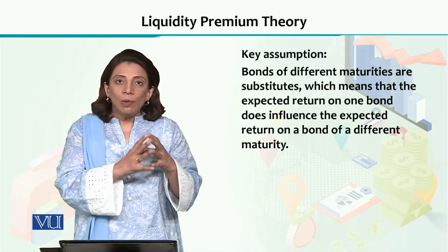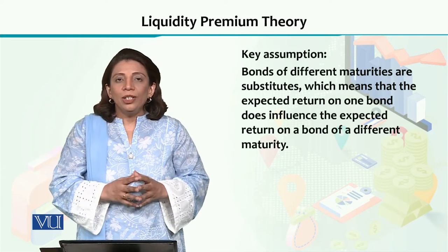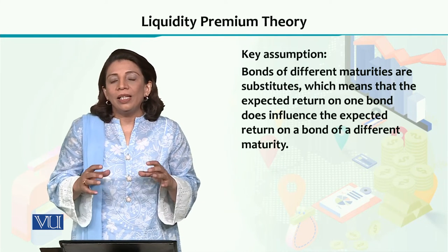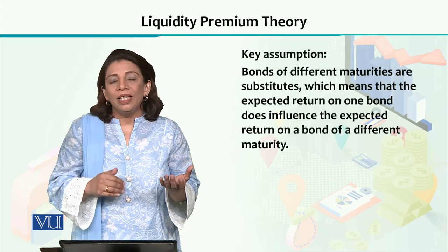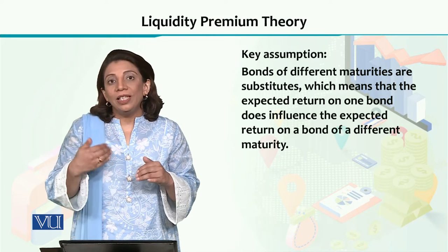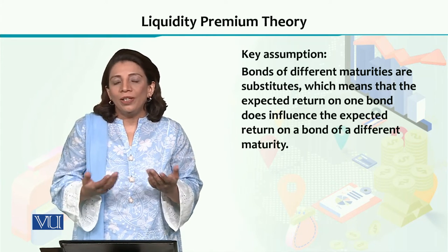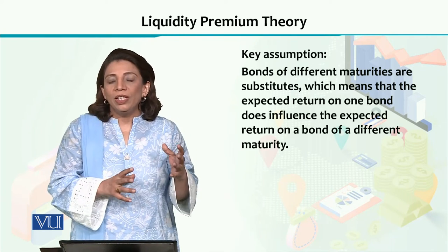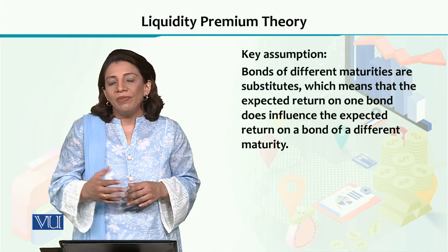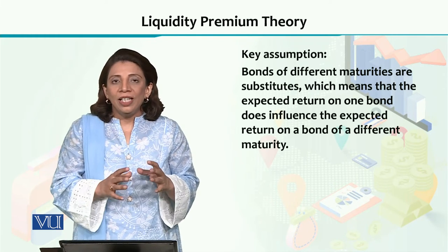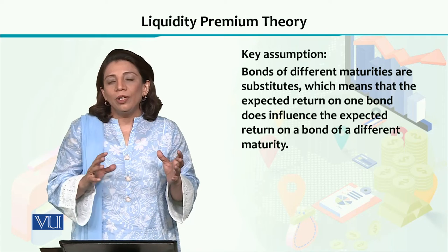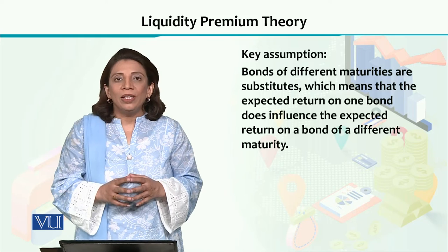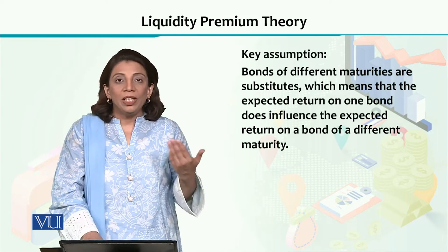Whereas the liquidity premium theory takes into account both short-term bonds and long-term bonds' markets as substitutes. Although it says they are not perfect substitutes, because there is the liquidity premium as a third factor which the investor considers when deciding between short-term and long-term investment opportunities. Bonds with different maturities can be considered as substitutes of each other, but they cannot be considered as perfect substitutes.